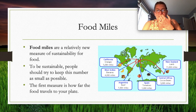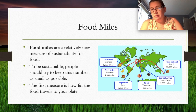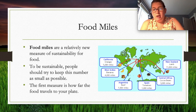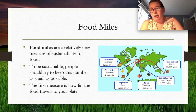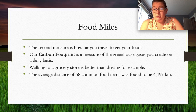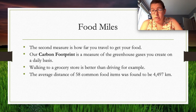Food miles is a relatively new measure of sustainability — it measures how far food travels to get to your plate, with the goal of keeping that number as small as possible. The second measure is carbon footprint: the amount of greenhouse gases produced to create your food. Cows themselves are a huge contributor to greenhouse gases, which might seem odd but is true.